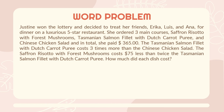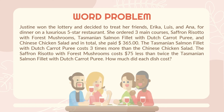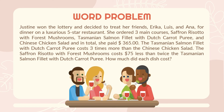Okay, let's start. Here is our word problem. Justine won the lottery and decided to treat her friends Erica, Luis, and Ana for a dinner at a luxurious five-star restaurant. She ordered three main courses: saffron risotto with forest mushrooms, Tasmanian salmon fillet with Dutch carrot puree, and Chinese chicken salad. In total, she paid $365. The Tasmanian salmon fillet with Dutch carrot puree cost three times more than the Chinese chicken salad. The saffron risotto with forest mushrooms cost $75 less than twice the Tasmanian salmon fillet with Dutch carrot puree. How much did each dish cost?